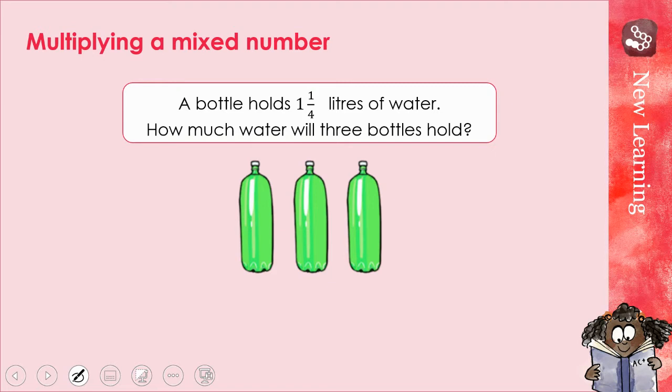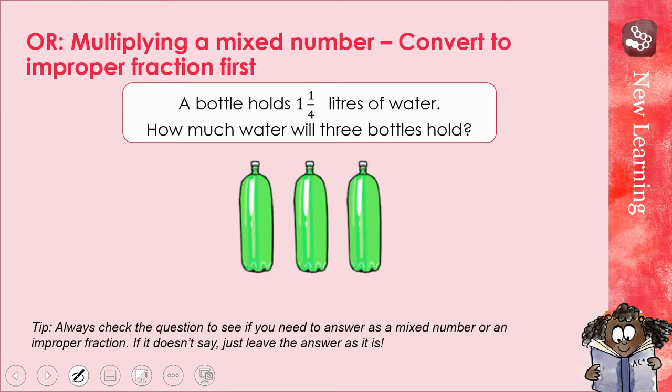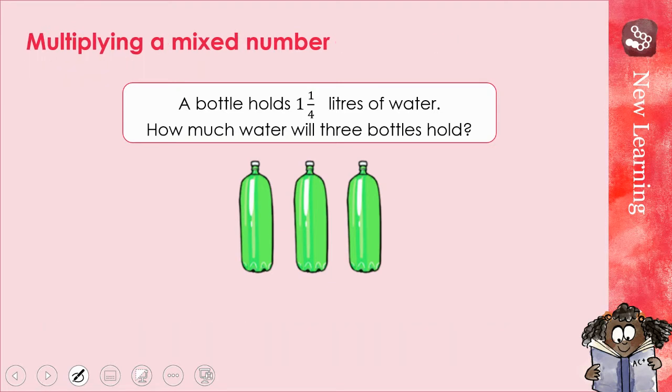A bottle holds one and a quarter litres of water. How much water will there be in the bottles? So let's start by working out what the question's asking us. I've got three bottles, three lots, and each of them holds one and a quarter litres. So I've got three lots of one and a quarter.